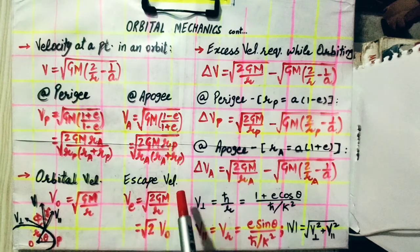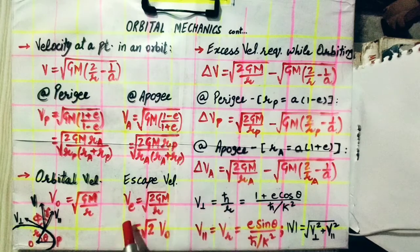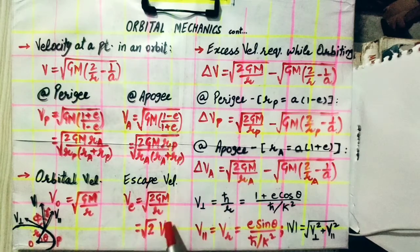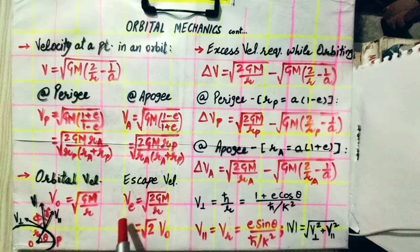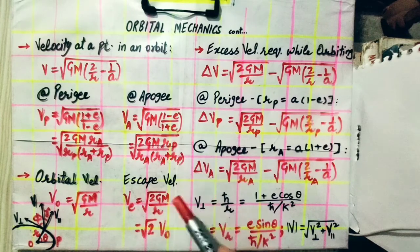Escape velocity is given by kinetic energy equals potential energy, because in escape velocity it follows parabolic trajectory and the binding energy will be zero. From there we have escape velocity equals under root 2GM by R, which is under root 2 times V0. Escape velocity is under root 2 times V0, and it's 11.2 km per second for spacecraft to escape from Earth's gravitation.